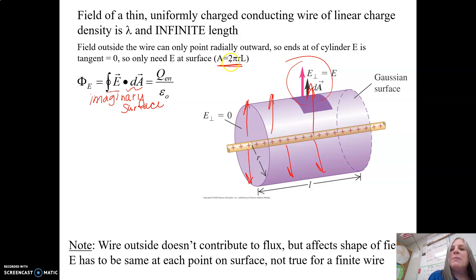which is this beautiful purple soup can looking thing. That's my Gaussian surface, and the area of a cylinder is 2 pi r times L. Now, this L is the L of my imaginary cylinder. It is not the L of my line of charge.